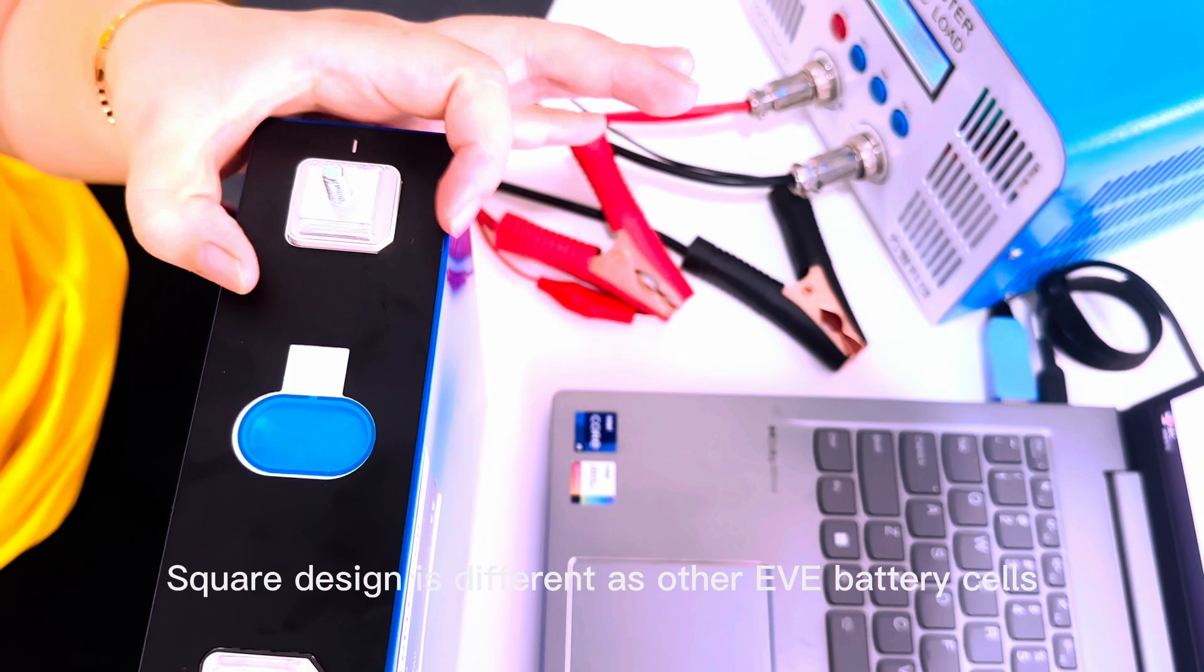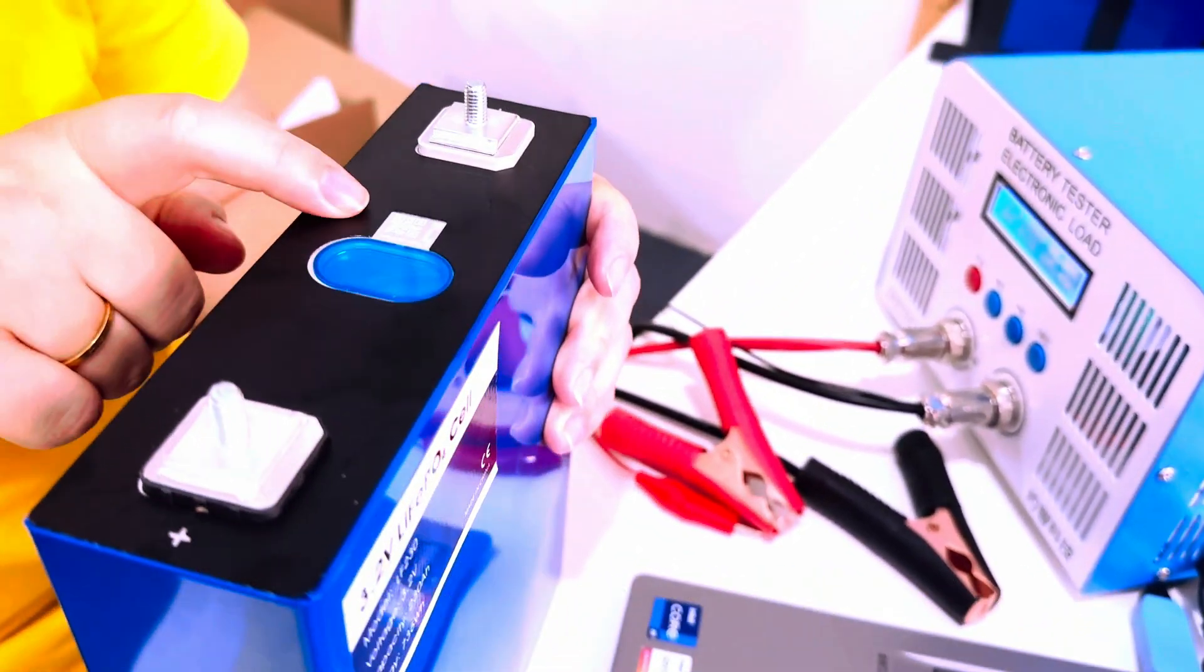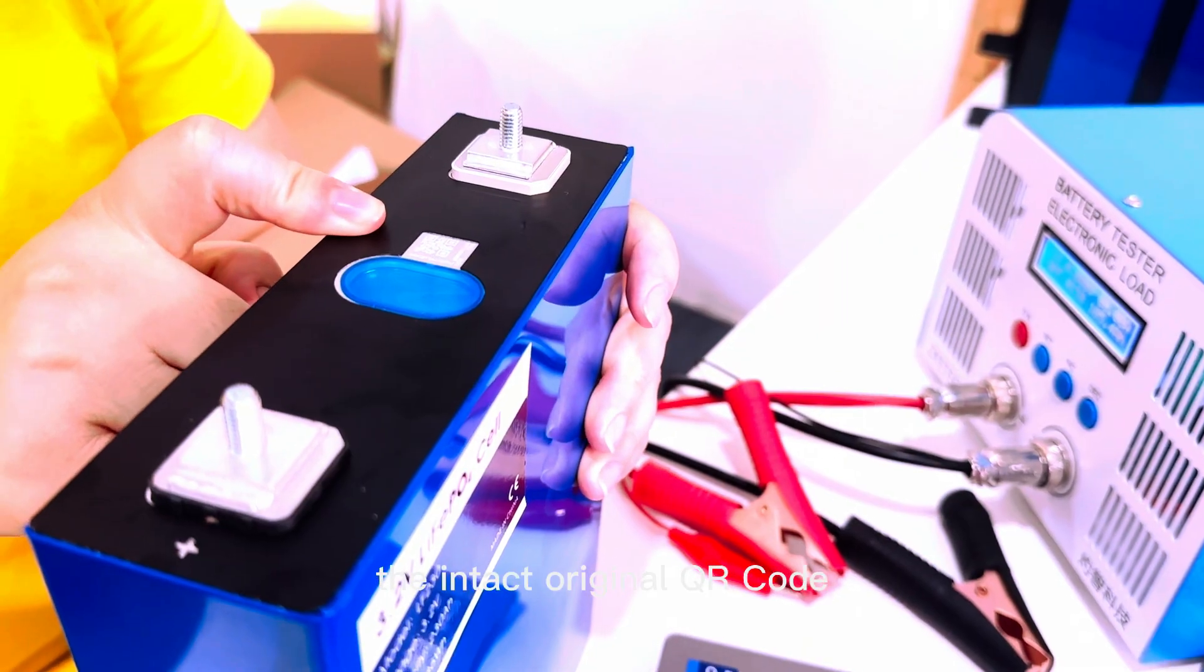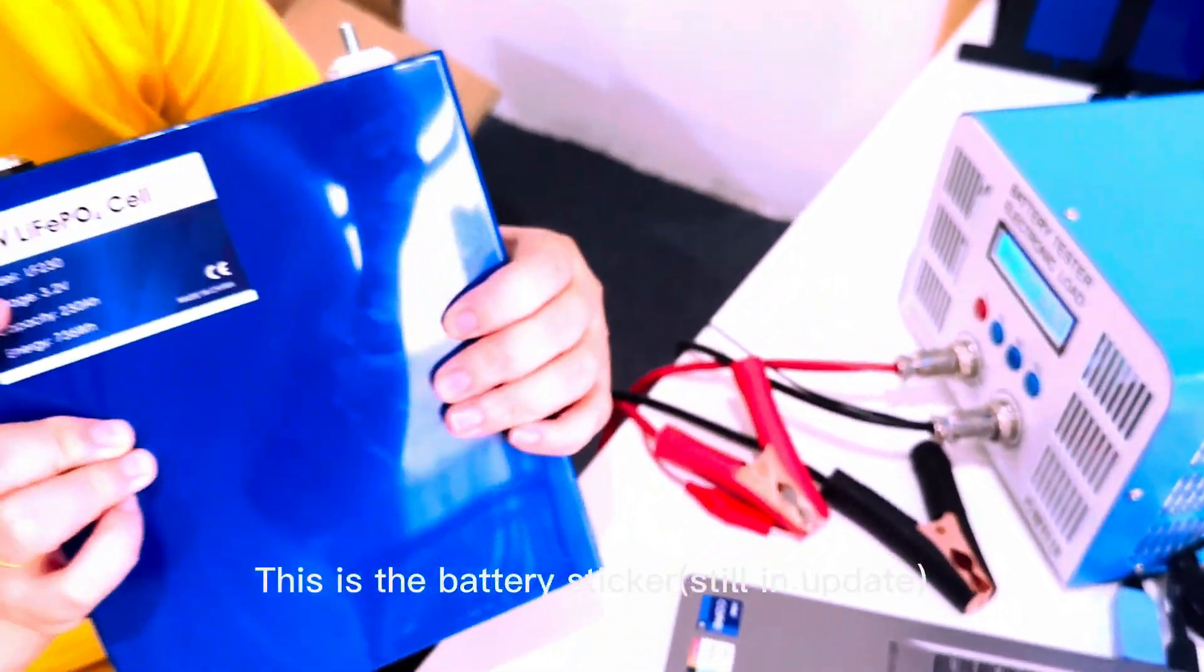And this is the intact original QR code. Okay, positive and negative. Let's connect it under the battery tester.